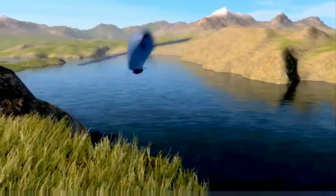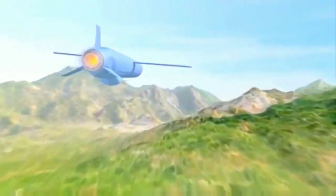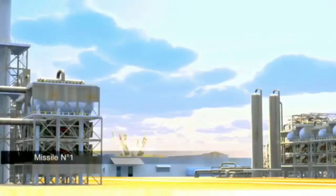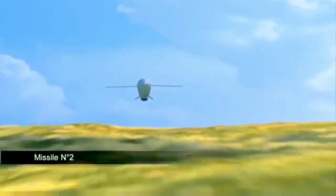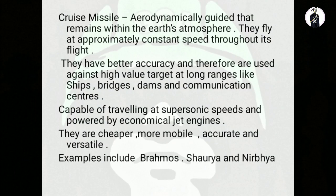Cruise missiles are powered by economical jet engines, because of which they are more cheaper, more mobile, more accurate, and more versatile compared to ballistic missiles. Examples of cruise missiles held with the Indian armed forces include the BrahMos missile, the Shaurya missile, and the Nirbhay missile. Summing up the major differences: ballistic missiles are governed by rocket motors, whereas cruise missiles are aerodynamically guided. Ballistic missiles can travel longer ranges, whereas cruise missiles have better accuracy and low error probability, which is why they are mainly used against high-value targets like communication centers, ships, and submarines.